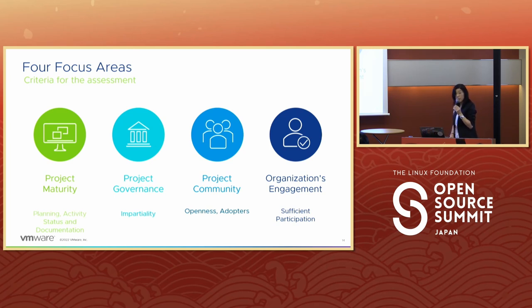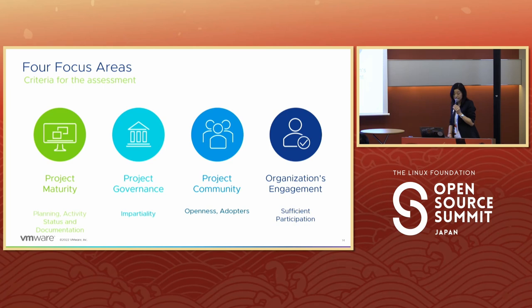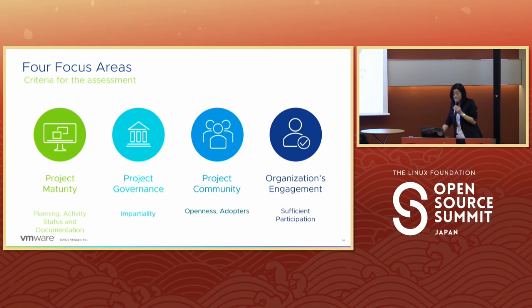For project maturity: does your project share a clear roadmap and plan? Does it provide a sufficient documentation set to enable you to develop and build on the project? For project governance and impartiality: is the governance spread across a variety of organizations to represent ecosystem needs? Has the project defined clear roles and a decision-making process? For project community and openness: does the project have an open communication channel and hold regular meetings? Is the project adopted by many organizations in the ecosystem? For organization engagement: does your team engage enough to understand the entire project? Does your organization hold any leadership role in order to be able to influence the project direction?